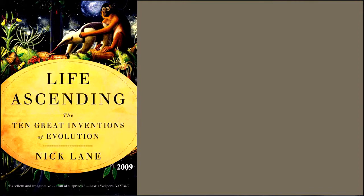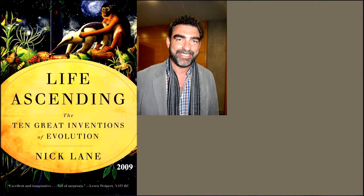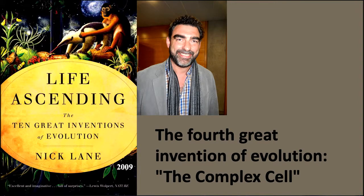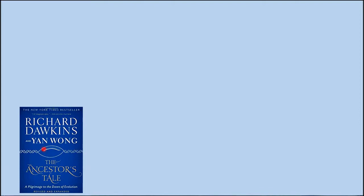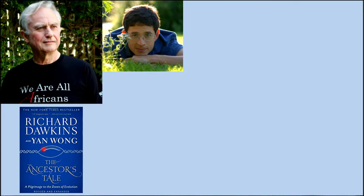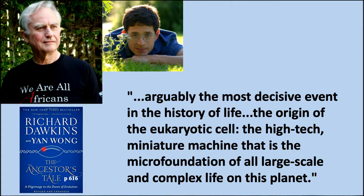Here's another book, Life Ascending: The Ten Great Inventions of Evolution by Nick Lane, published in 2009. Nick Lane wrote that the fourth great invention of evolution was the complex cell — in other words, a eukaryotic cell. He also wrote that the gulf between bacteria and everything else is a matter of organization at the level of cells. Another book, The Ancestor's Tale, written by Richard Dawkins and Yan Wong, states: 'Arguably the most decisive event in the history of life — the origin of the eukaryotic cell, the high-tech miniature machine that is the micro-foundation of all large-scale and complex life on this planet.'